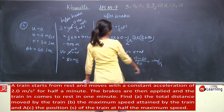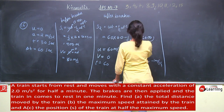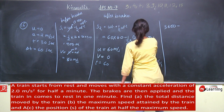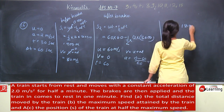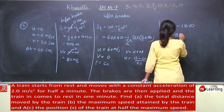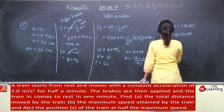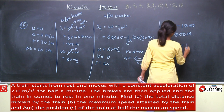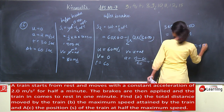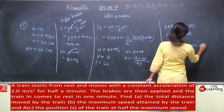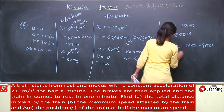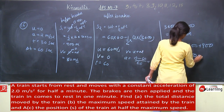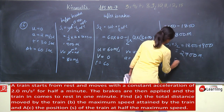Putting the acceleration value in, total distance covered is S1 plus S2, that is 1800 plus 900, which equals 2700 meter, or 2.7 kilometer.